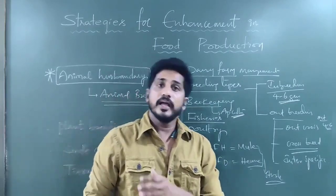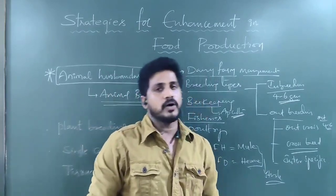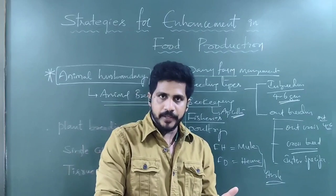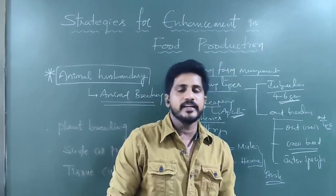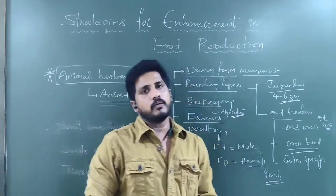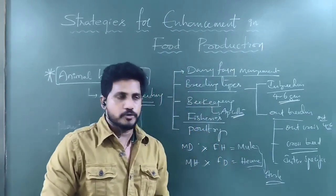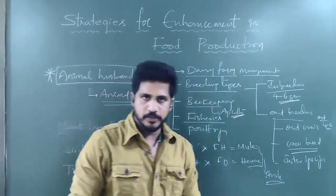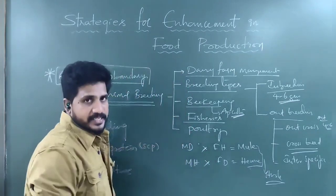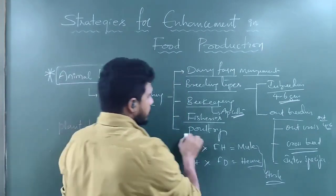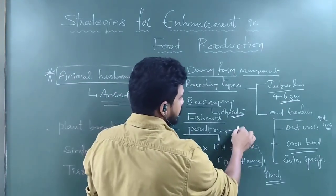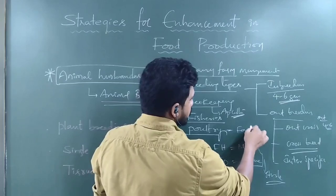Aquaculture covers all water organisms, whereas fish culture — pisiculture — deals only with fishes. Next is poultry, which refers to birds reared for chicken meat and eggs.